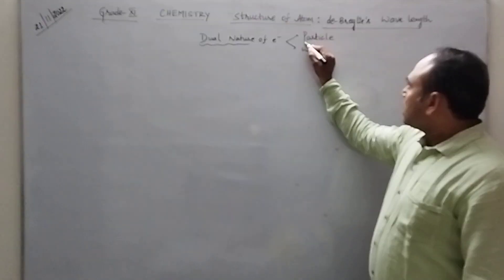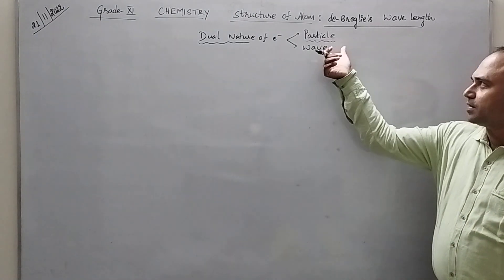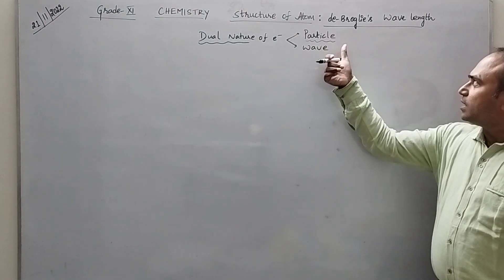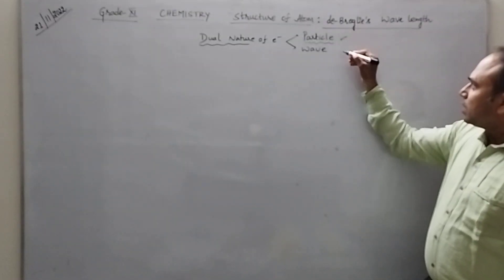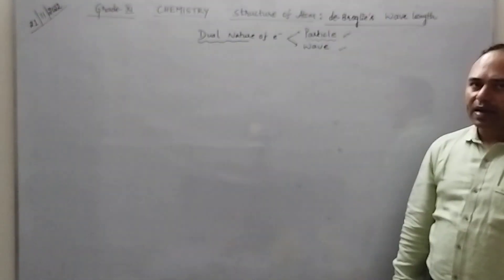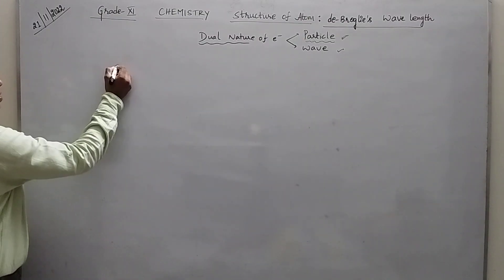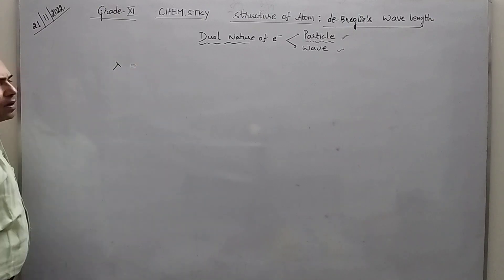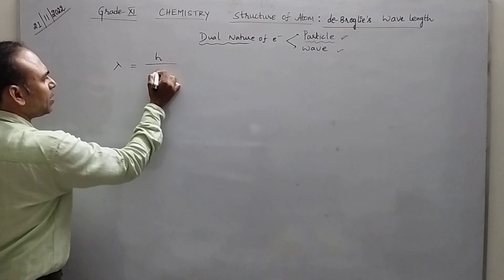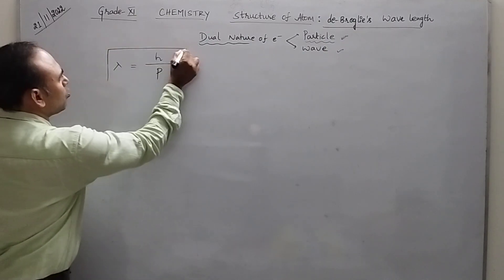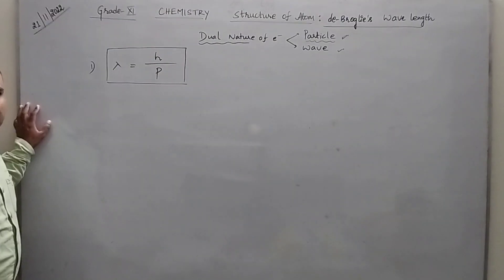Earlier we were having an idea that the electrons are showing the particle nature, but later it was found after identifying the wavelength that electron exists as a particle as well as it shows wave nature also. Accordingly de Broglie says that the wavelength can be calculated by using this formula. He was a French chemist.